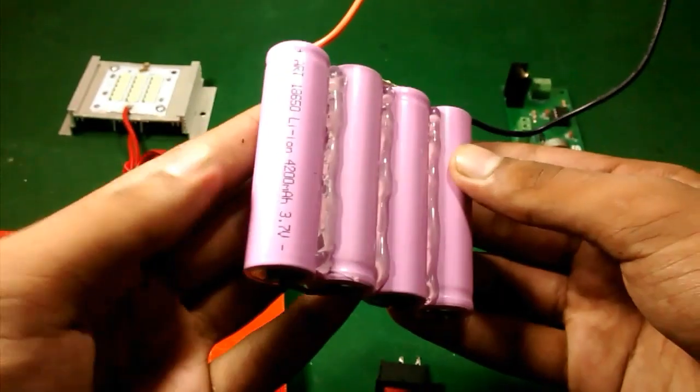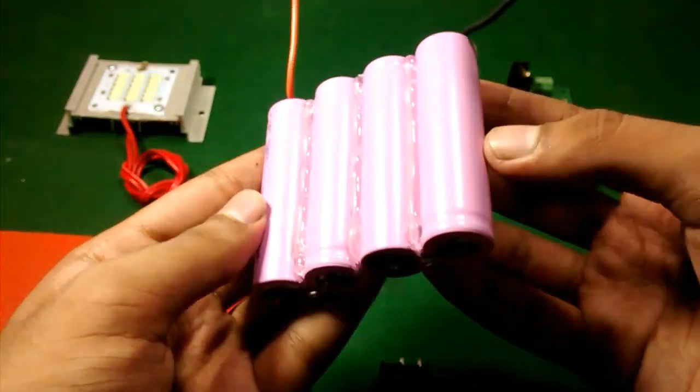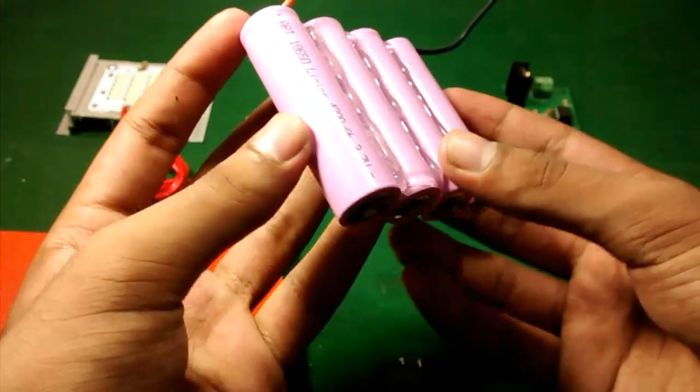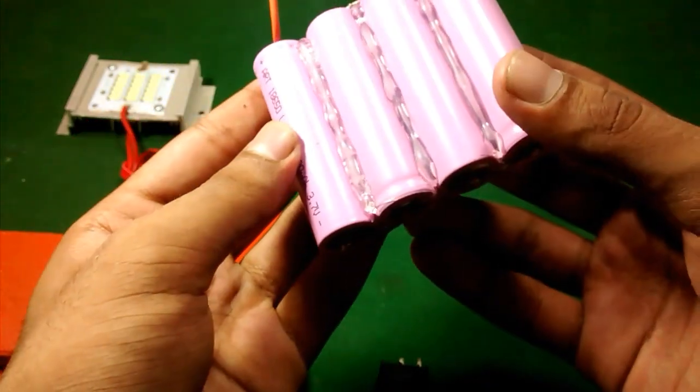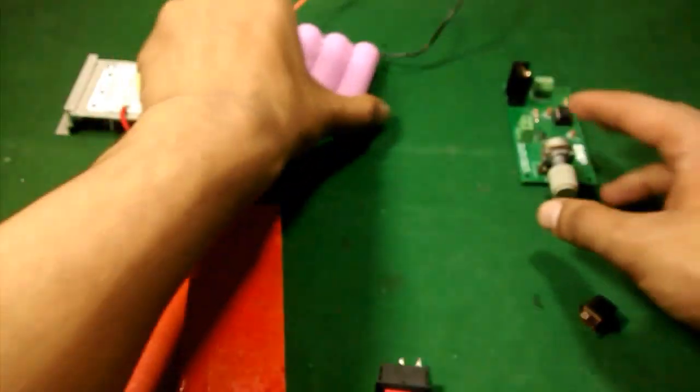This 14.8-volt battery I made by connecting four 3.7-volt batteries in series, and then finally this PWM controller.